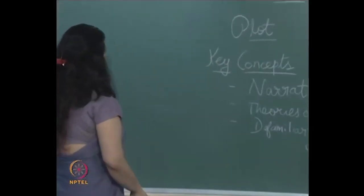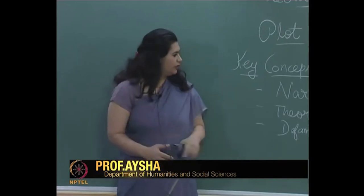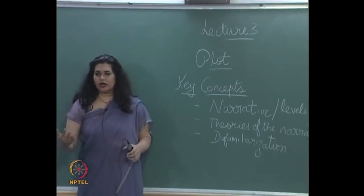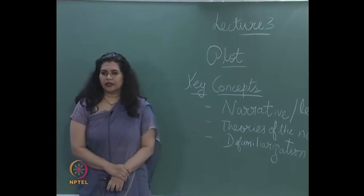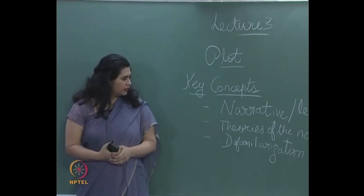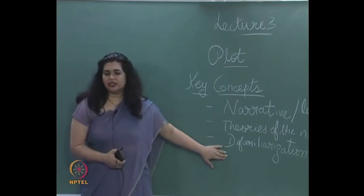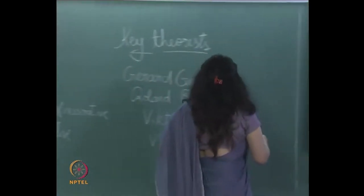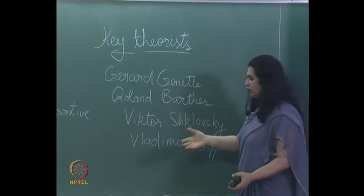Good morning. Lecture 3. Today we are going to focus on plot in films. These are the key concepts I will be discussing today: what is narrative, elements of narrative, how a plot is implotted, levels of narrative, diegetic and intra-diegetic elements, theories of narrative, and certain cinematic and literary concepts like defamiliarization and the concept of the unreliable narrator. These are the key theories, but this is not an exhaustive list — we will deal with more as we go deeper into the course.